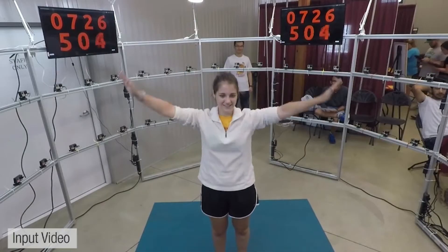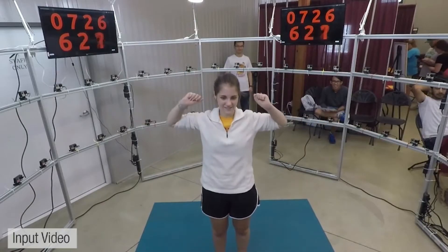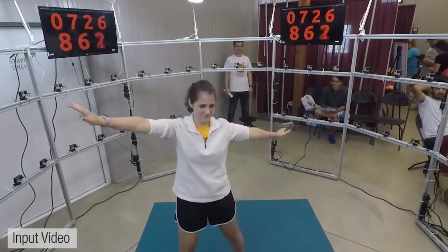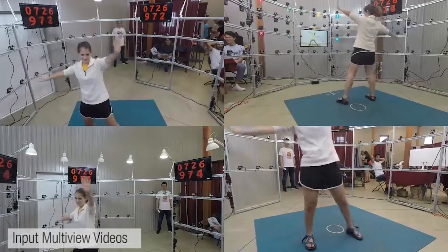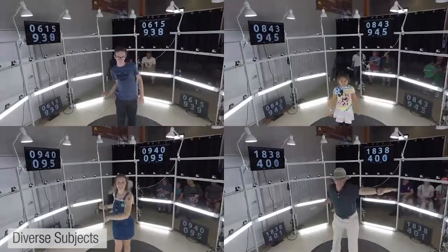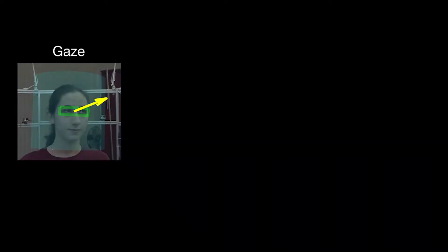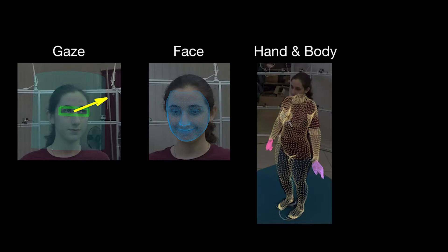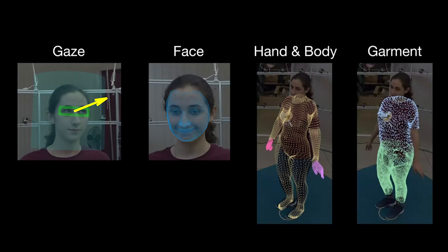We present a new dataset called HUMBI to enable modeling appearance and geometry of human body expressions. 107 cameras are used to scan 772 distinctive subjects focusing on five expressions: gaze, face, hand, body, and garment.